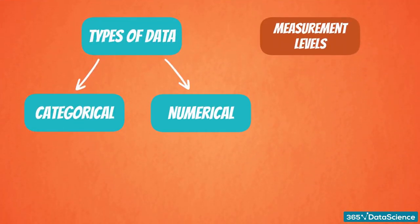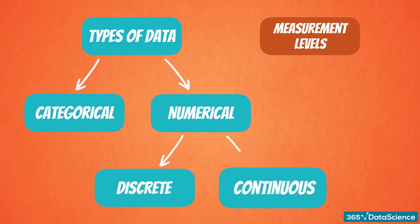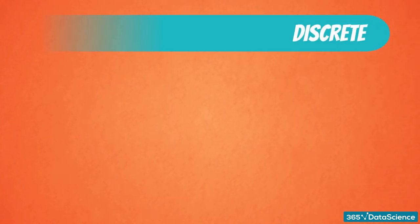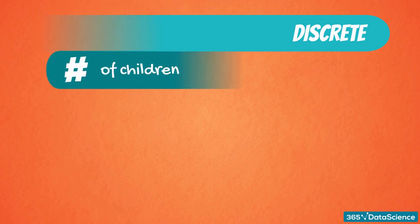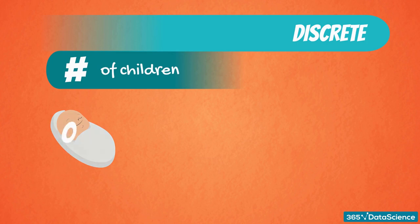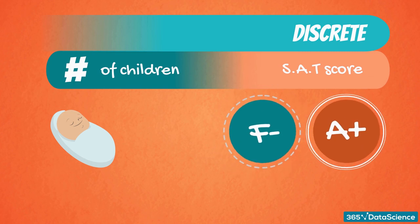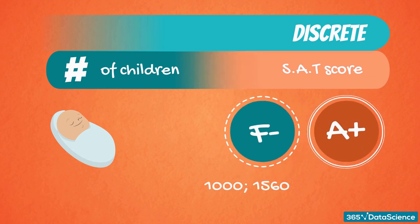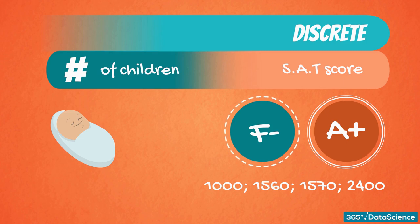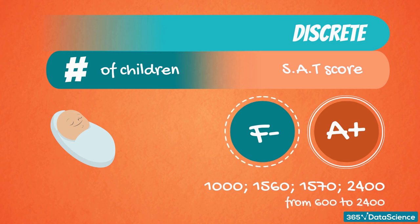Numerical data, on the other hand, as its name suggests, represents numbers. It is further divided into two subsets: discrete and continuous. Discrete data can usually be counted in a finite matter. A good example would be the number of children that you want to have — you are absolutely sure that the value will be an integer such as 0, 1, 2, or even 10. Another instance is grades on the SAT exam: you may get 1000, 1560, 1570, or 2400. What is important for a variable to be defined as discrete is that you can imagine each member of the dataset.